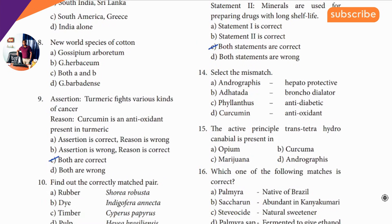Eighth question: new world species of cotton. Cotton — you know — barbadense is the answer.